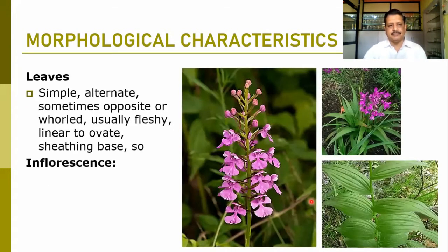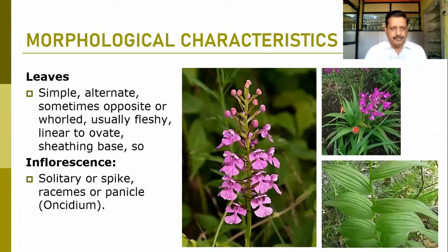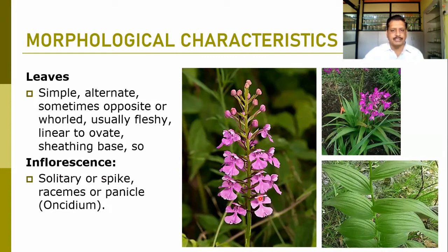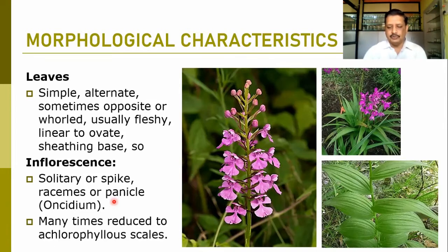When we talk about the leaf structure in the family, the leaves are mostly simple. They are alternately placed and sometimes opposite or in a whorl. The whorled leaf structure can be observed. Leaves are usually fleshy, linear to ovate, and mostly sheathing at the base. The inflorescence is mostly solitary, in a spike or racemose type. It can be modified into a panicle-like structure, and reduction in the form of scales can also be observed in many members.